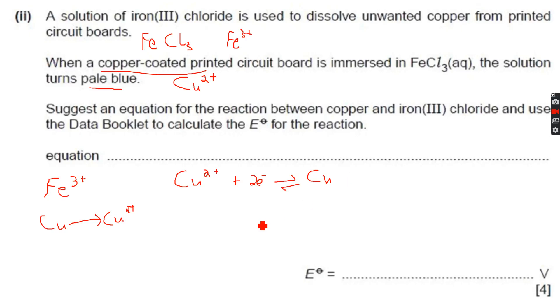Fe3+ would have to be reduced because that's the rule - one species gets oxidized, the other species gets reduced. For this one we will have Fe3+ plus e- gives Fe2+.